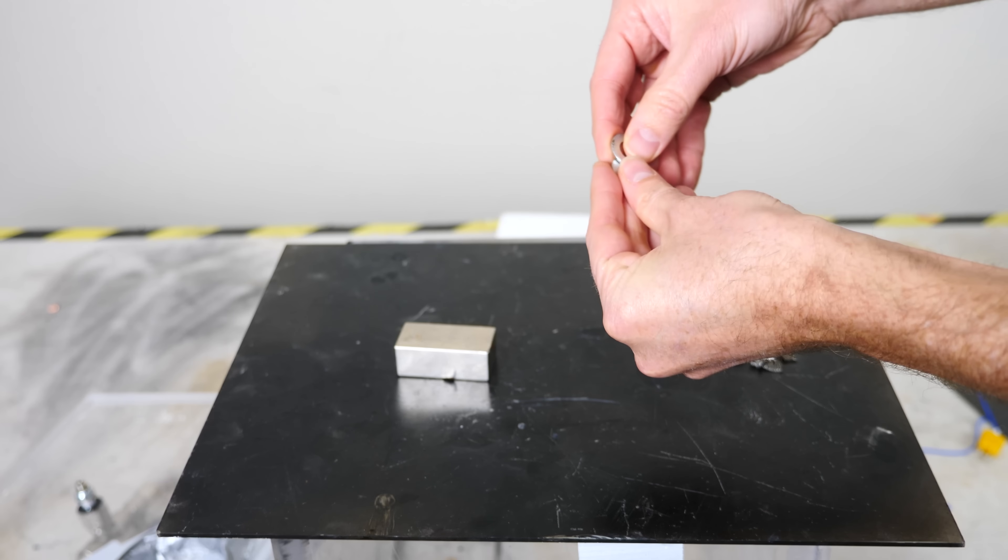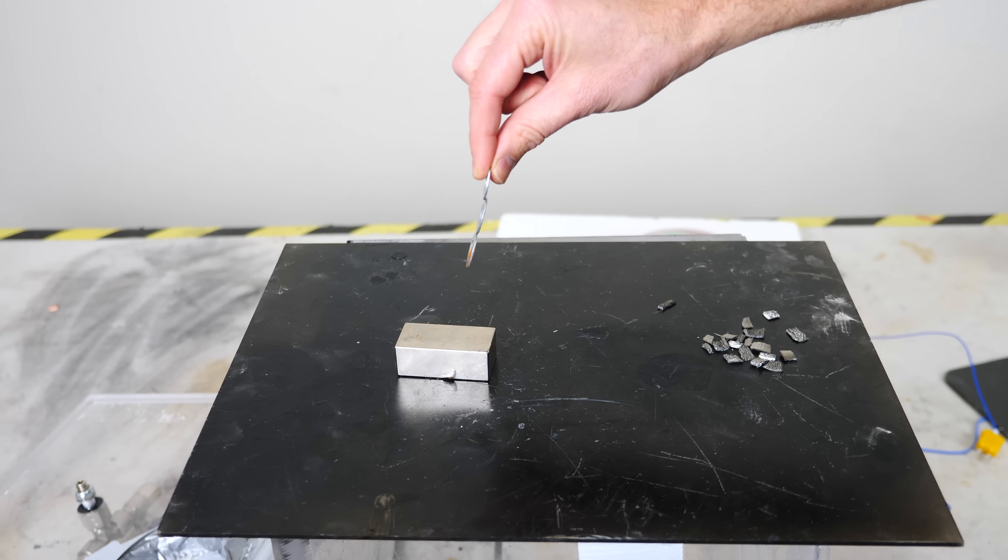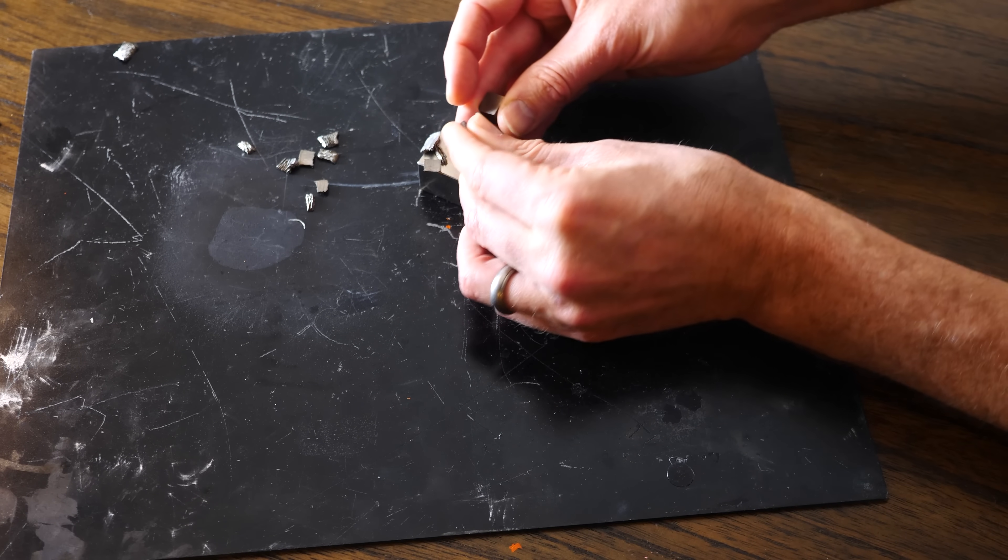You can see this when you put two pieces of a ferromagnetic near a magnet. They'll become their own magnet and stick together. But when I use gadolinium above 68 degrees Fahrenheit, it won't do this.